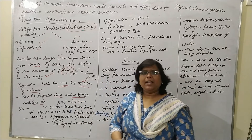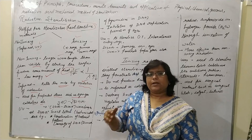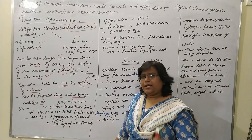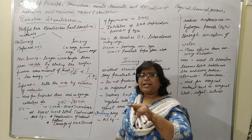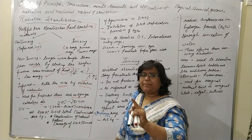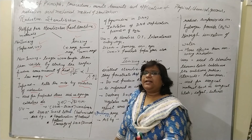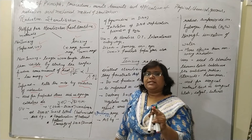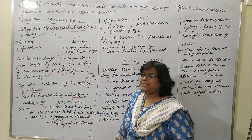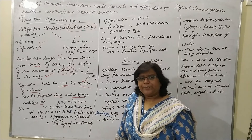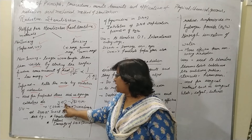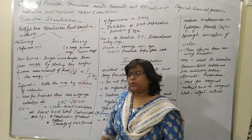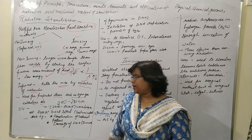The reason is that 1 angstrom is 10 to the power minus 10 meters, and 1 nanometer is 10 to the power minus 9 meters, so you cut down one zero when converting.